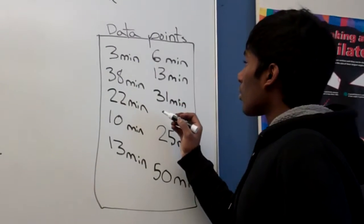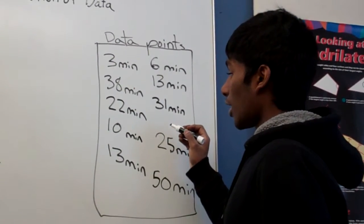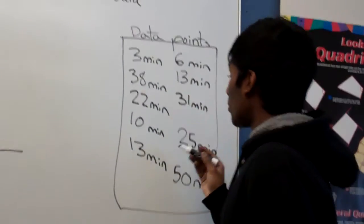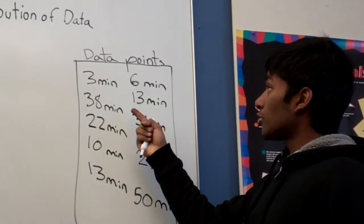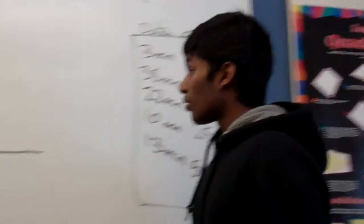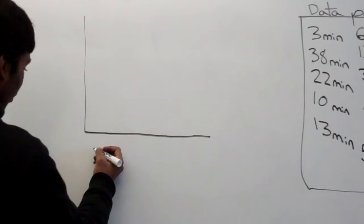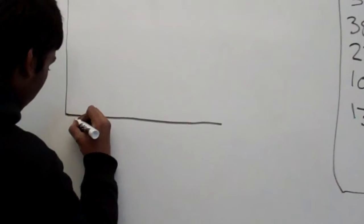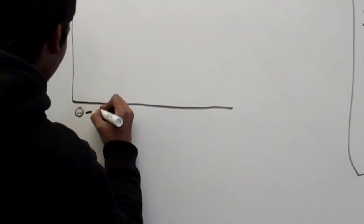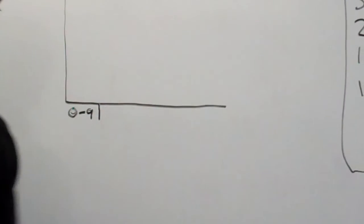So first we're going to take the data points that are from minutes zero to nine. So these two people take three minutes and six minutes and there's no other people in that category. So we're going to go over here and write zero to nine and that's going to be the first category.